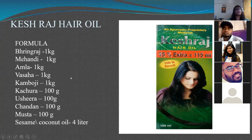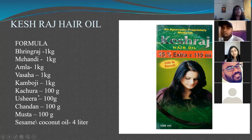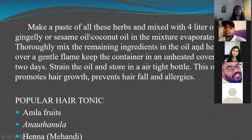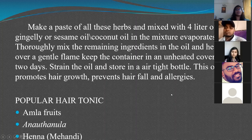Kesh Raj hair oil is made using herbs like Bhringraj, Mehendi, Amla, Pashaka, Kambuji, and Kachura mixed in four liters of sesame or coconut oil. Boil until the mixture evaporates, thoroughly mix the remaining ingredients in oil, keep for two days, strain, and store in an airtight bottle. It can be used for hair growth, prevents hair fall and allergy.